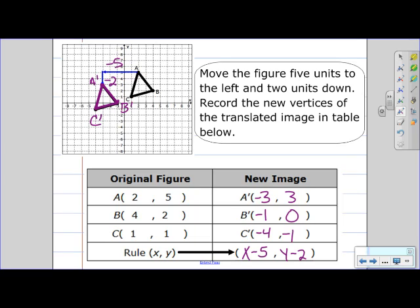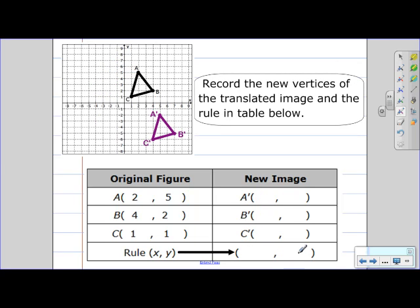So let's take a look at our next question. Record the new vertices of the translated image and the rule in the table. Okay, so we have triangle ABC and then triangle A'B'C'. And it has been translated.